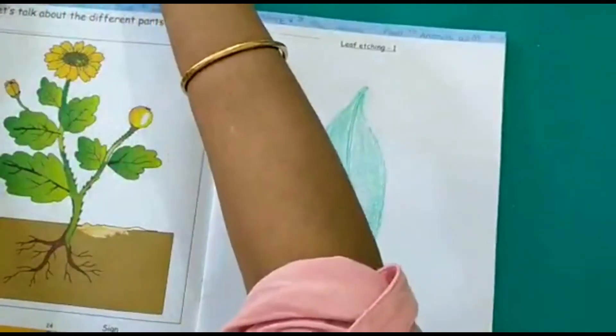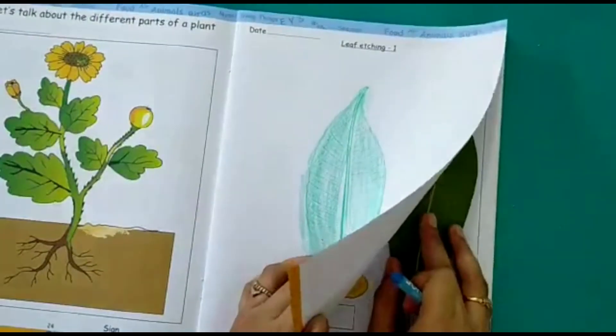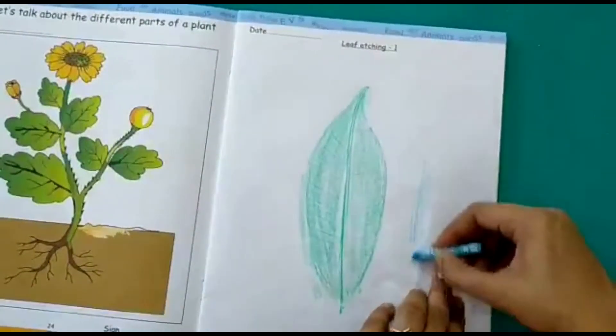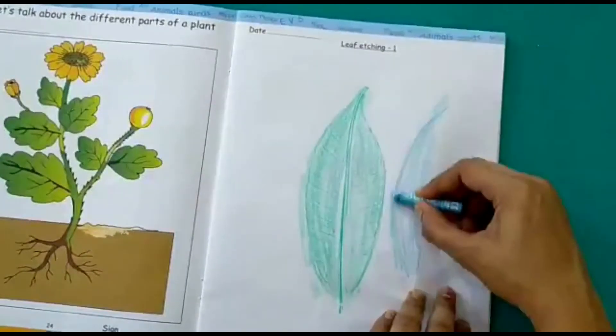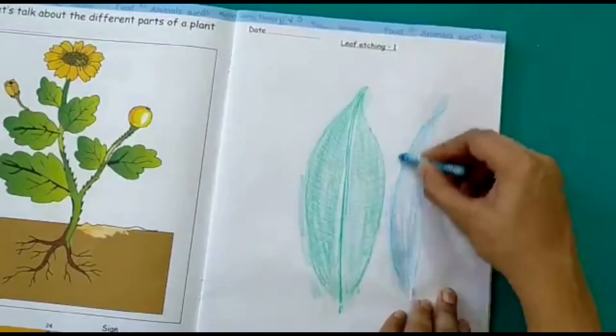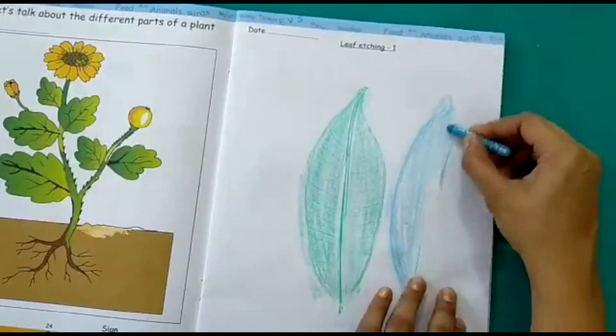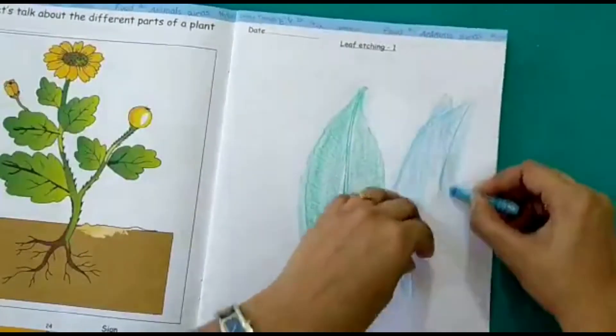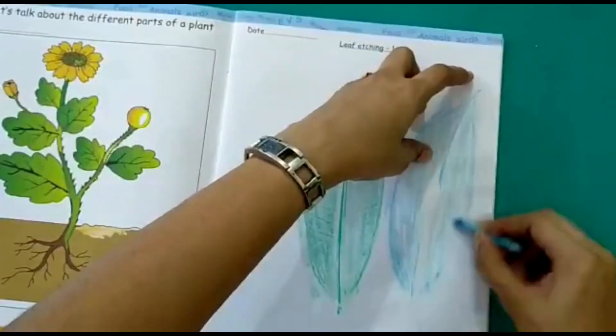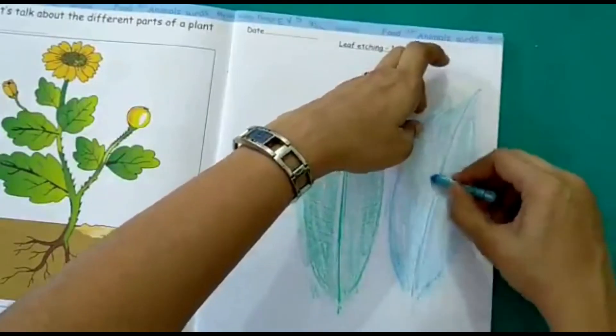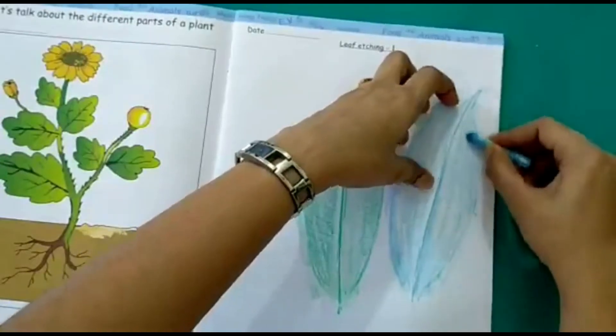Like now I will be taking a blue crayon and now let's rub the crayon over the leaves once again. I have got a blue color leaf here. See? Isn't this beautiful?